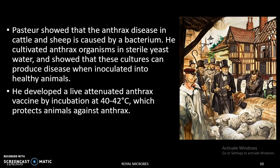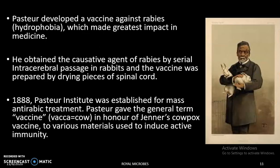The second vaccine was the anthrax vaccine. He found that anthrax disease in cattle and sheep is caused by a bacterium, and he cultivated the bacterium and showed that these cultures can produce disease when inoculated into healthy animals. He then attenuated the anthrax bacillus by growing it at a temperature of 40 to 42 degrees Celsius, thereby preparing a live attenuated vaccine that protects animals against anthrax.